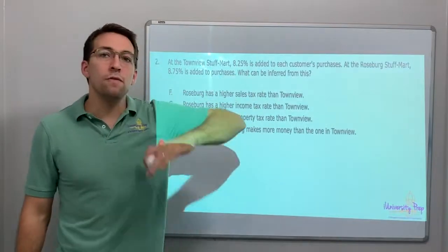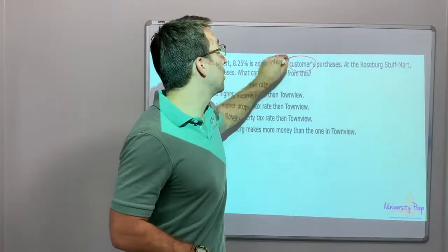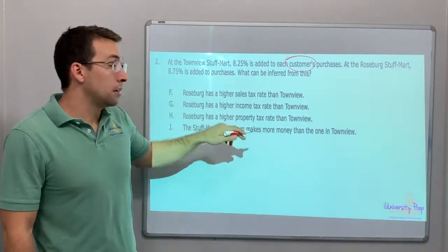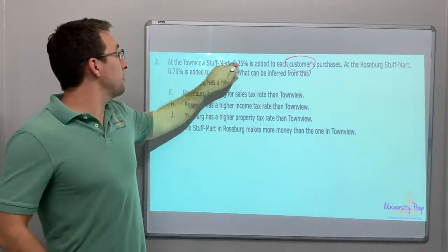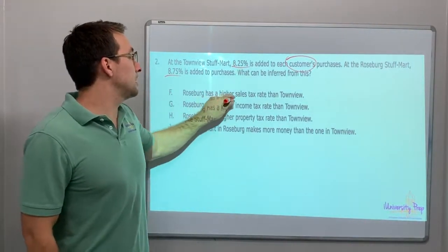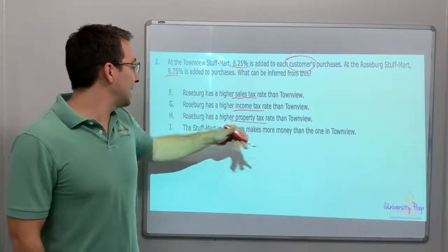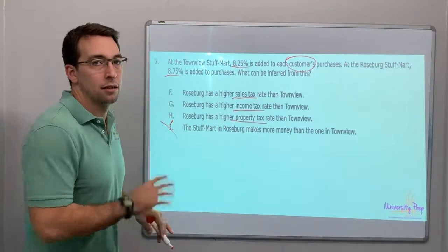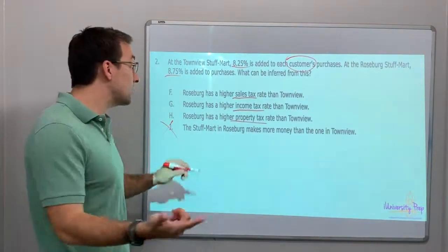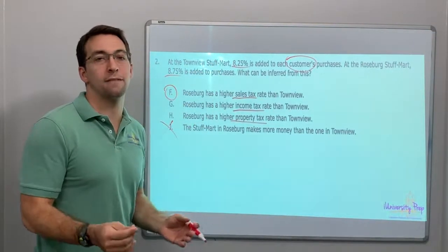Number two: at the Townview Stuff Mart, 8.25% is added to each customer's purchase — when they buy things. At the Rosenberg Stuff Mart, 8.75% is added to the purchases. So we're comparing 8.25% and 8.75%. What can be inferred from this? This question is asking, do you know what kind of taxes you have to pay? Customers pay sales tax — sales tax when you buy things. At the Stuff Mart, when you buy stuff, you pay a sales tax.